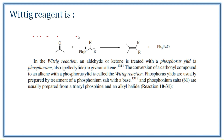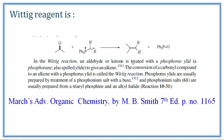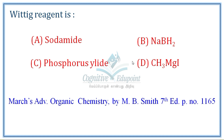Next question: Wittig reagent is nothing but a phosphorus ylide. The ylide is the active agent — that is the Wittig reagent, a phosphonium salt, which in turn gives an alkene. Correct answer is C — phosphorus ylide.